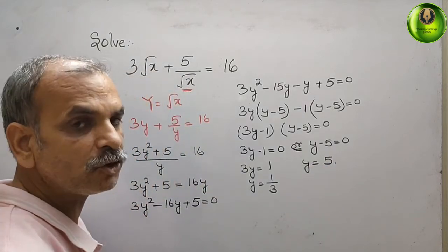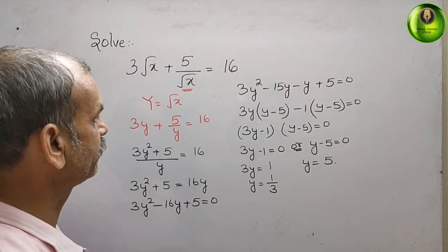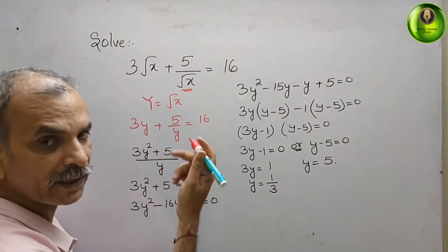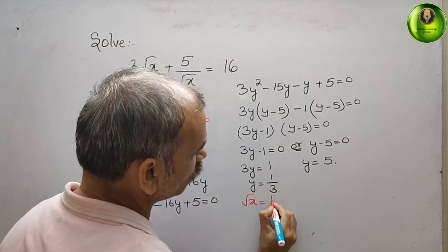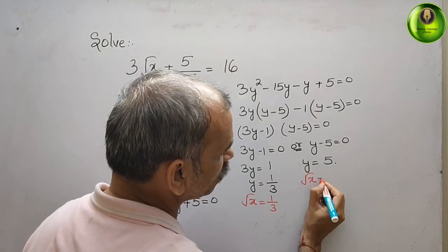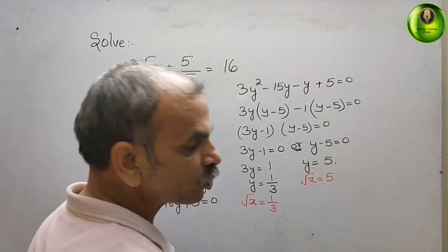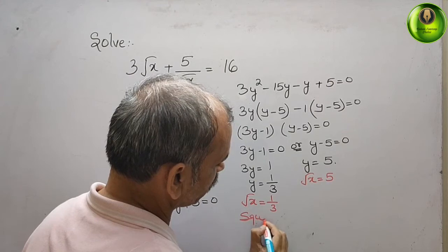But we want the values in x. So now again y is equal to root x. That means this is your root x. Root x is equal to 1 by 3. And here root x is equal to 5. Next go for a squaring. Squaring both sides.